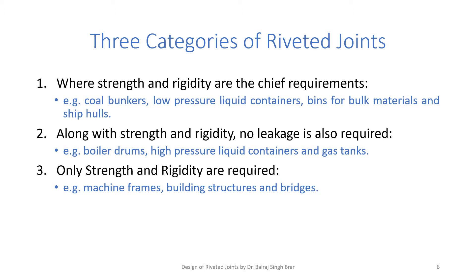Joints are basically categorized into three categories. First, where strength and rigidity are the chief requirements — for example, coal bunkers, low pressure liquid containers, bins for bulk materials, and ship hulls. Second, along with strength and rigidity, no leakage is also required — for example, boiler drums, high pressure liquid containers, and gas tanks. Third, where only strength and rigidity are required — for example, machine frames, building structures, and bridges.